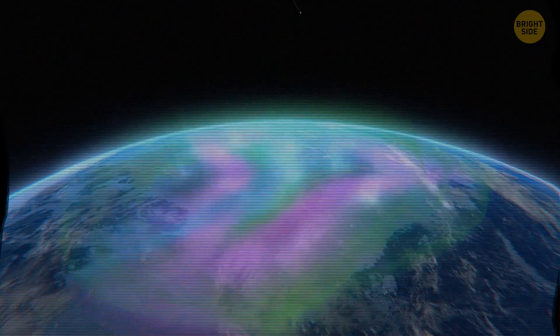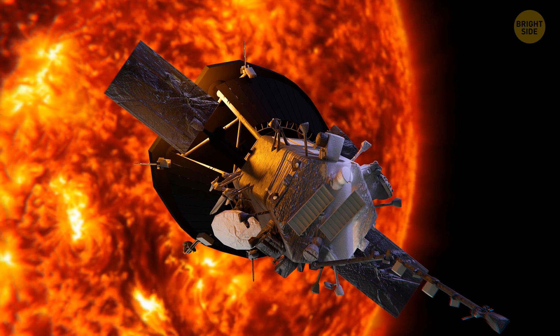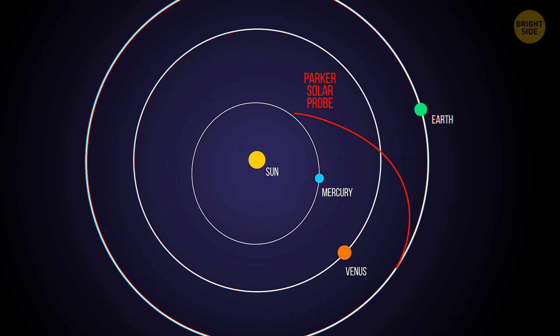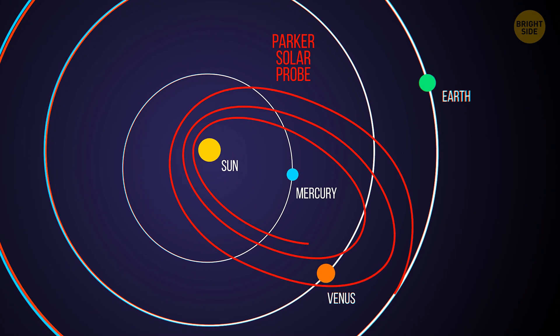Currently, the United States has a space probe headed for the solar corona. Because the corona of the sun extends outward for many millions of miles, the Parker Solar Probe, as it's called, is cruising 3.8 million miles from the surface of our star, or about one-tenth the distance to Mercury.